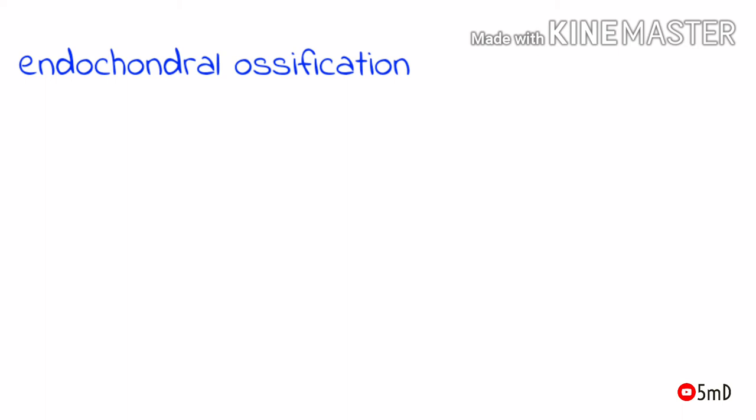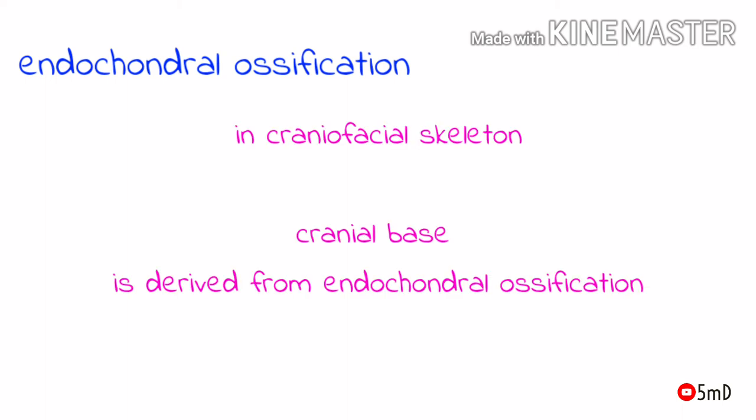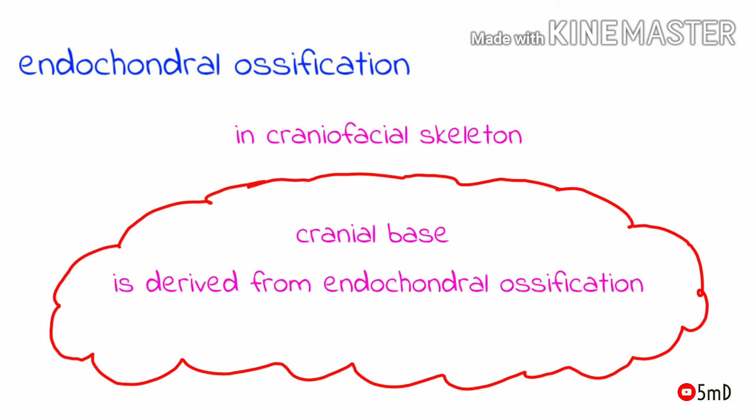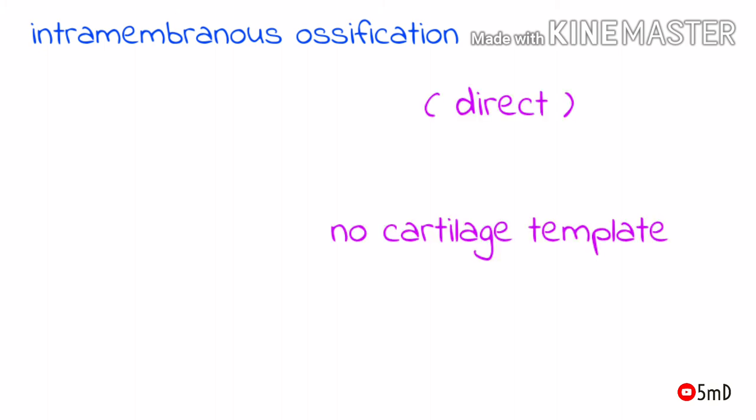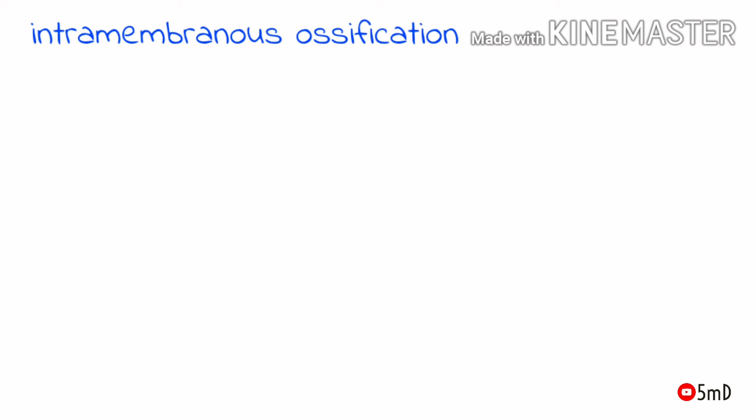In the craniofacial skeleton, bones of the cranial base and some portions of the calvarium are derived from endochondral ossification. The second method of bone formation is intramembranous ossification, also known as direct ossification. It is called direct because there is no involvement of a cartilage template — bone is formed straight away on the condensed mesenchyme.